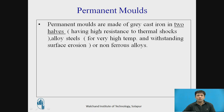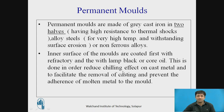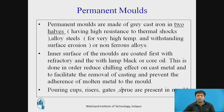Permanent mold castings are made with the help of gray cast iron in two halves having high resistance to thermal shocks, alloy steels — for very high temperatures and withstanding surface erosion — or non-ferrous alloys. The inner surface of molds is coated with refractory and lamp black or core oil. This is done to reduce the chilling effect, which is more in die casting compared to sand molding because the mold itself is made of metal or alloys. This also facilitates the removal of the casting and prevents adherence of molten metal to the mold. Pouring cup, risers, gates, and sprue are present in the mold.